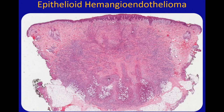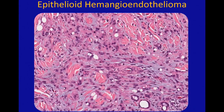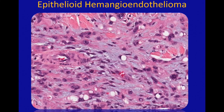Microscopically, when they're in the skin they are a dermal or subcutaneous nodule. At higher power, the classic feature is epithelioid cells arranged in cords and chains or small nests within a myxoid and sclerotic — or mucinous and sclerotic — background. When you see the cells, they have vacuoles in their cytoplasm, which are referred to as blister cells, and these blister cells will often have little red cell fragments within them.